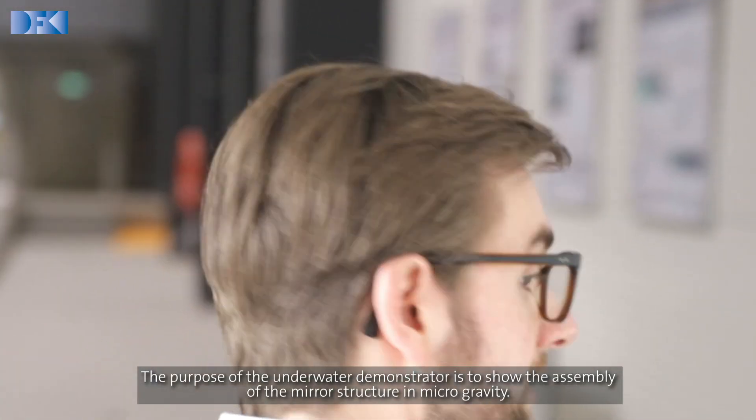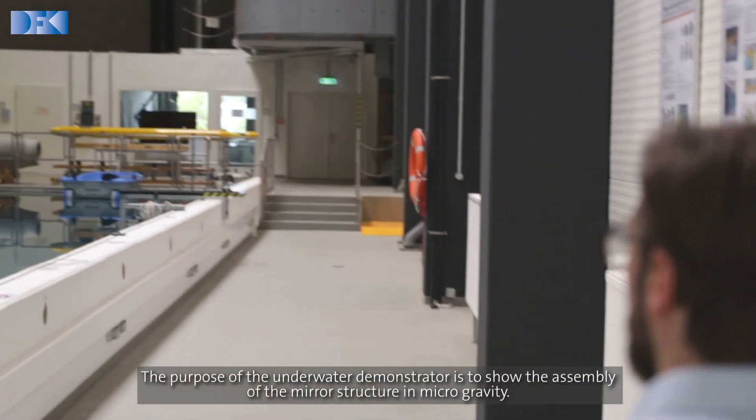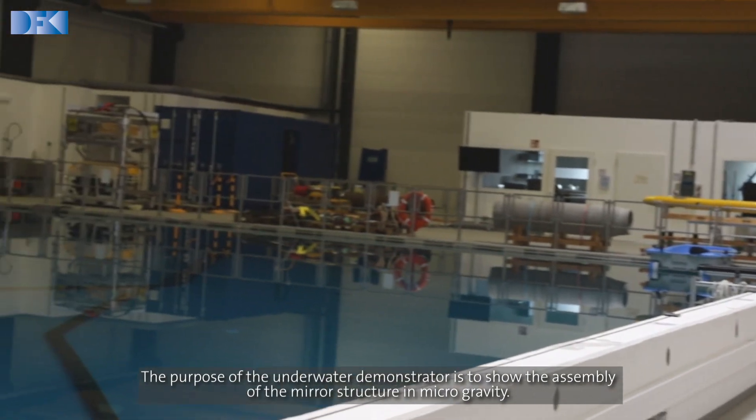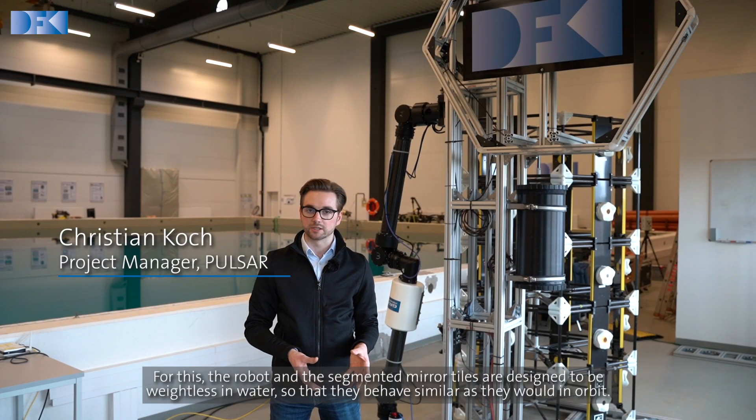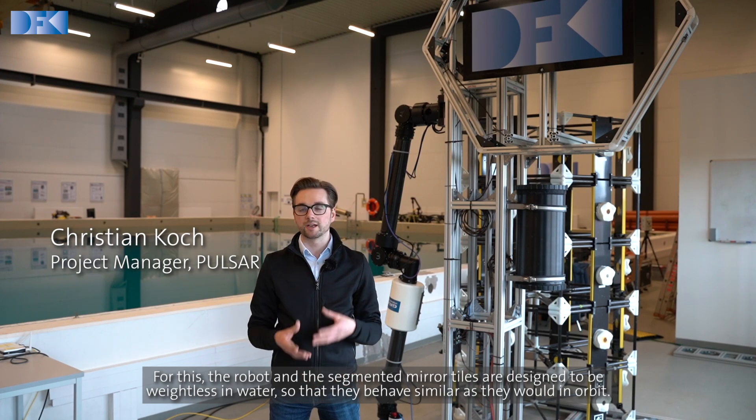The purpose of the underwater demonstrator is to show the assembly of the mirror structure in microgravity. For this, the robot and the segmented mirror tiles are both designed to be weightless in water, so that they behave similarly as they would in orbit.